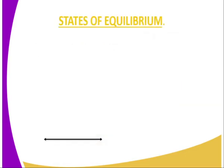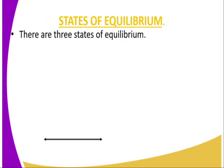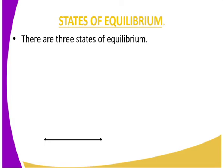When it comes to equilibrium — states of equilibrium — there is one point that we need to understand: when a body is at rest, all the forces acting upon it balance one another. And there are three states of stability: stable, unstable, and neutral.